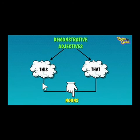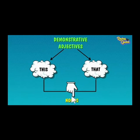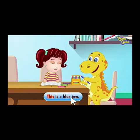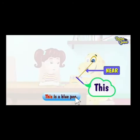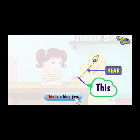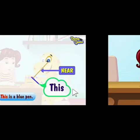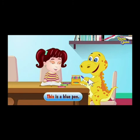Next are demonstrative adjectives — these are very easy. There are mainly four demonstrative adjectives: this, that, these, and those. This and that are always used with nouns. Look at the example: 'This is a blue pen.' The blue pen is near, so we use 'this.'